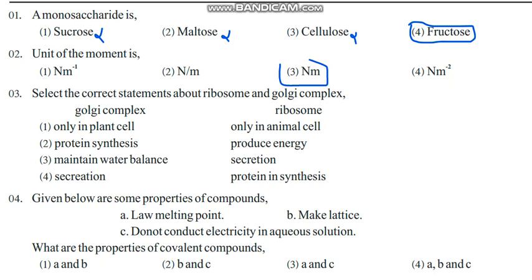Select the correct statement about ribosome and Golgi complex. They are organelles in a cell. Golgi complex is present in both plant and animal cells. Protein synthesis - not by Golgi. Maintain water balance - that's by the vacuole. Secretion is suitable for Golgi complex. Ribosome produces energy - no, that's mitochondria. Secretion is by Golgi complex; protein synthesis is the function of ribosome. So the fourth one is the correct answer.